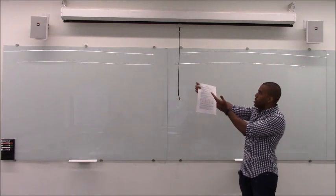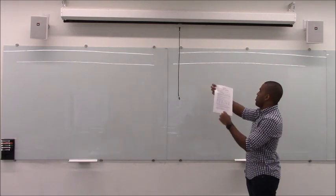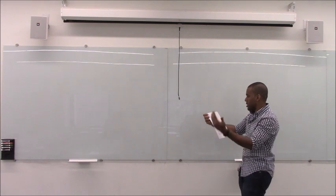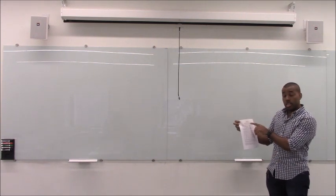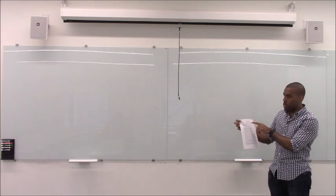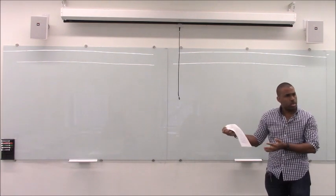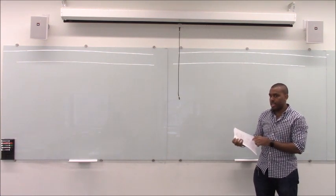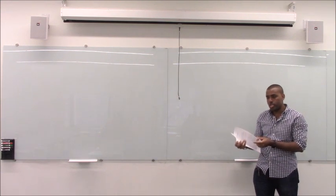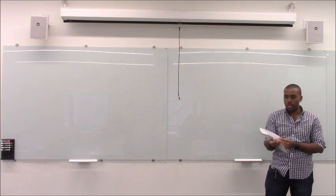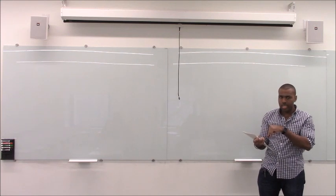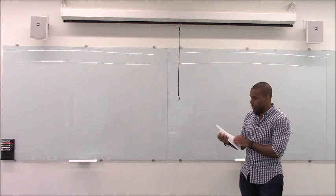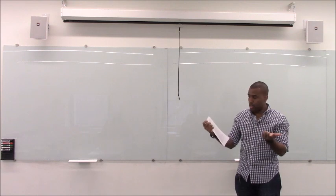Welcome — this is Applied Calculus One, Math 1203, Section R03. There are several versions of Calculus One at this college, so make sure you're in the right one. Applied Calculus is usually for biology majors and people in health sciences. If you're a physics, chemistry, math, or computer science major, you should not be in this class — you need the other version.